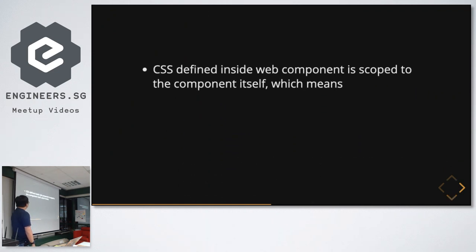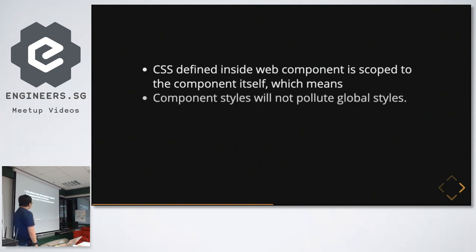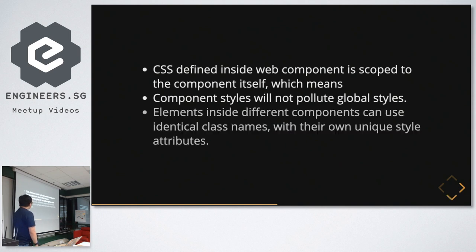About styling: for web components, since they make use of the Shadow DOM, all the JS and CSS inside the component is scoped within the component itself. So the component styles should not pollute the global styles. Elements within the Shadow DOM of the web component can even use very generic class names and you don't worry about conflicting with things outside the scope of the web component.